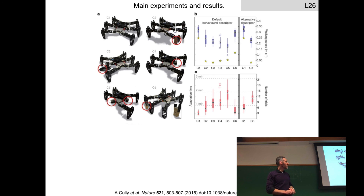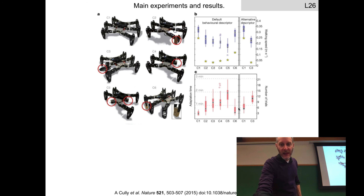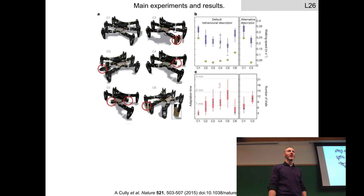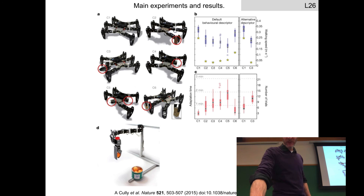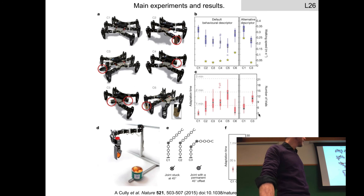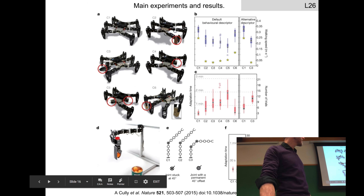They're plotting the adaptive time: it took between less than a minute to two or three minutes to recover, and between three to five — in some cases up to 18 or 20 — trials. Still pretty good: a pretty fast algorithm with relatively few trials. They also tried this with a different robot to show it wasn't just specific to the hexapod — the arm robot could adapt and compensate for damage in less than 30 seconds most of the time.